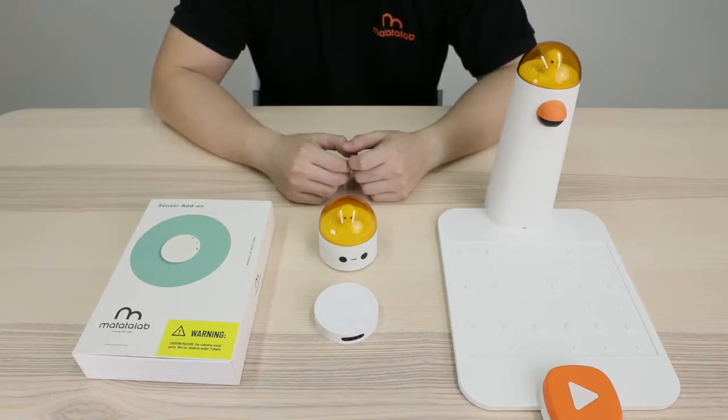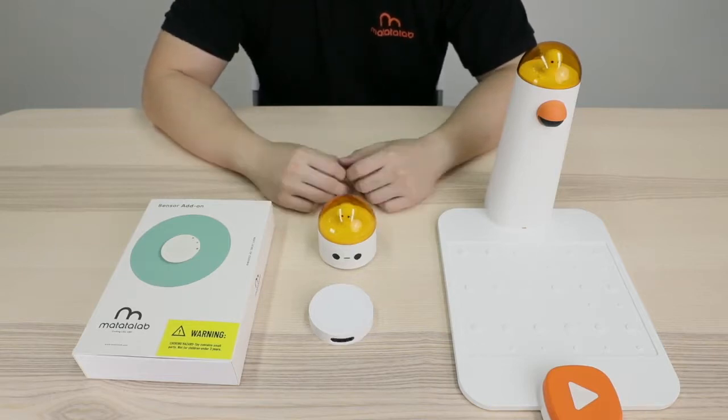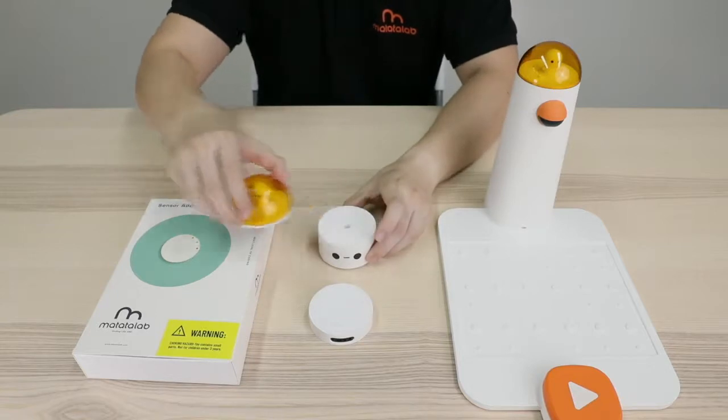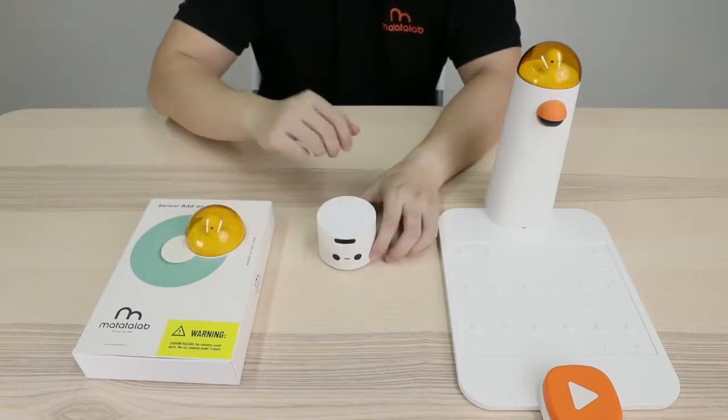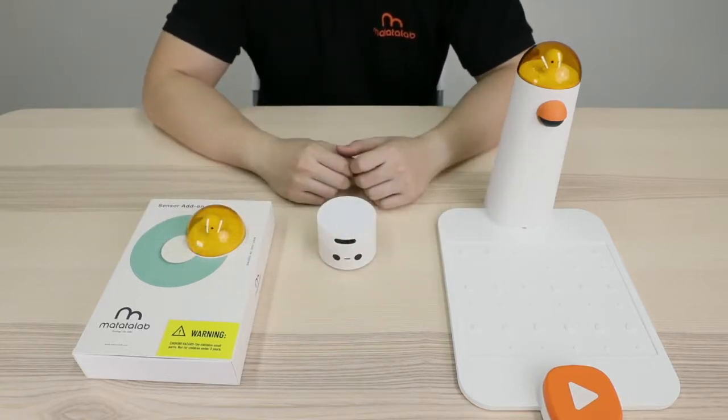When we hear a small tune, we've already connected the three components correctly. In sensor mode, we no longer hold the controller in our hand. We need to put the sensor on top of the matata bolt. Due to the magnetic attraction, they can be easily attached.